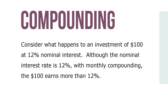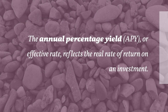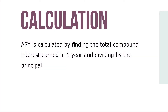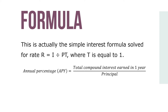Here's how these investments are really working. The annual percentage yield, or APY, or effective rate, reflects the real rate of return on an investment. APY is calculated by finding the total compound interest earned in one year and dividing it by the principal. This is actually the simple interest formula solved for rate: R equals I divided by PT, where T is equal to 1. So APY is equal to total compound interest earned in one year divided by principal.